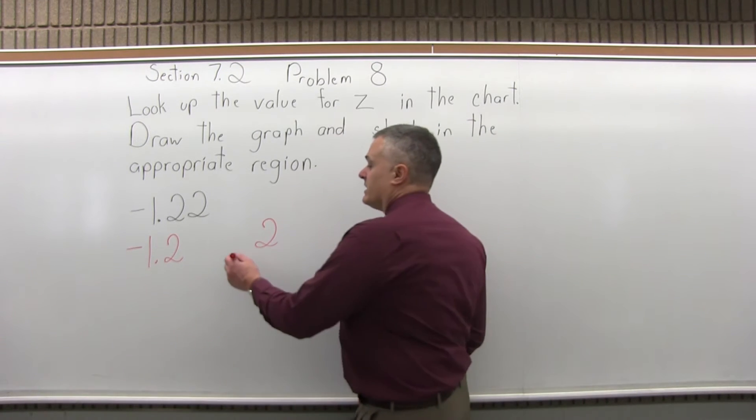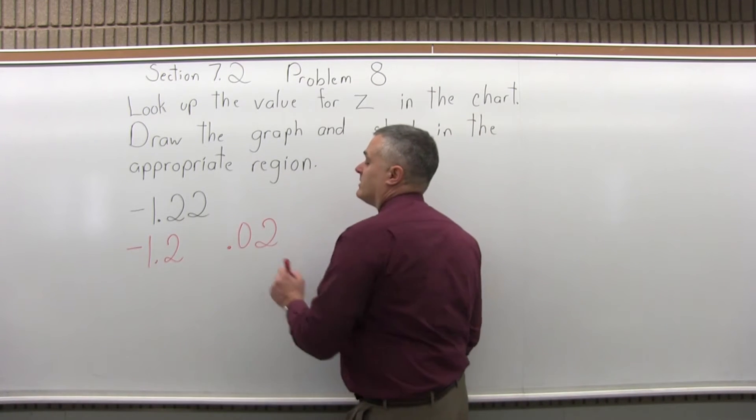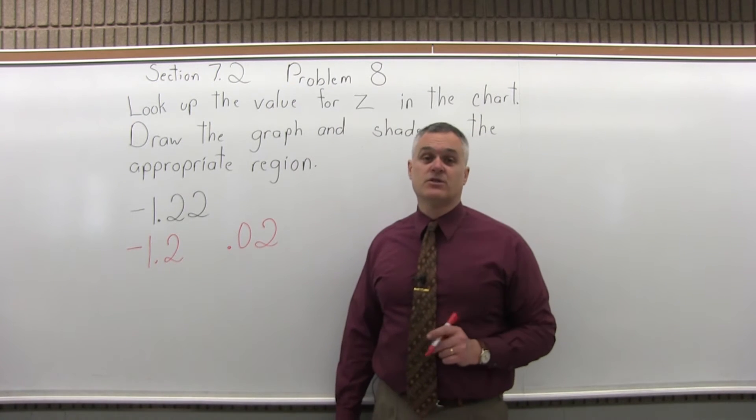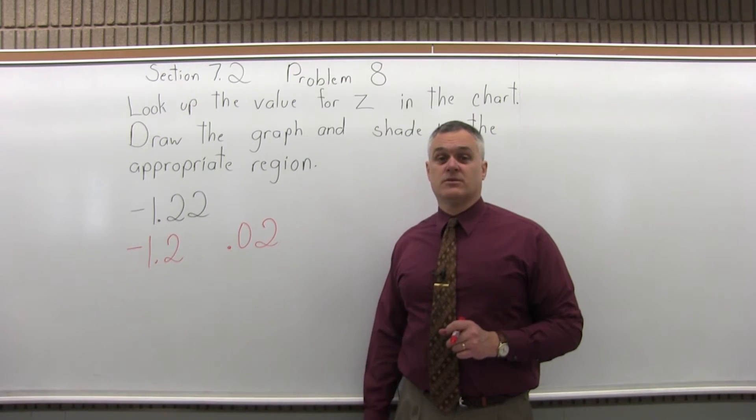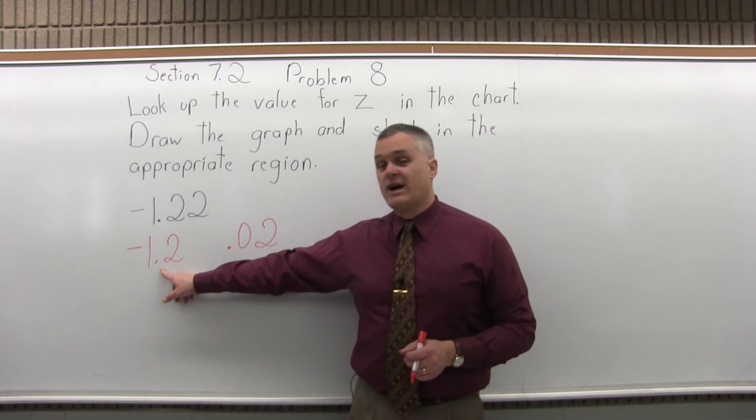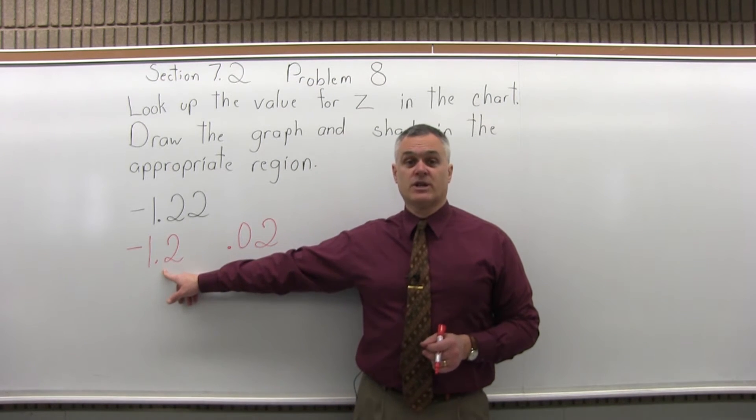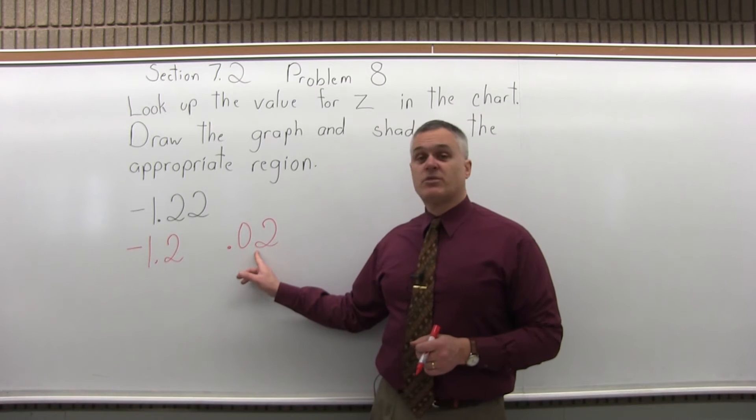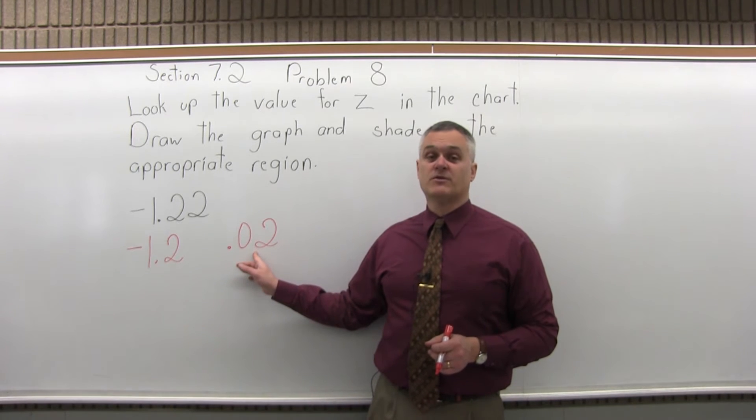Step 3, put a .0 in front of the rightmost digit that you pulled off. So instead of 2, it's now .02. And then we go to the chart, the digits from the left will tell you what row of the chart you look in and the digit from the right with a .0 in front will tell you what column of the chart to look in.